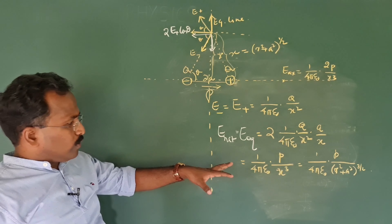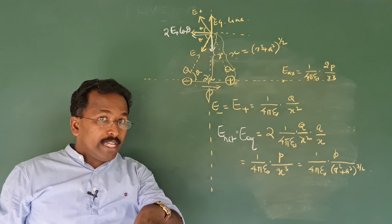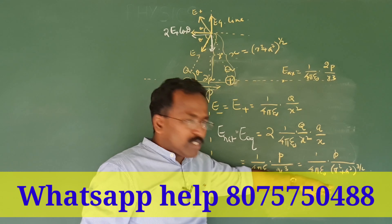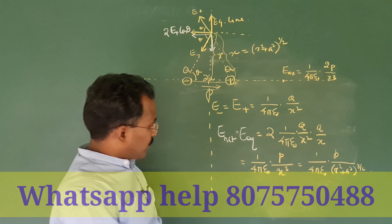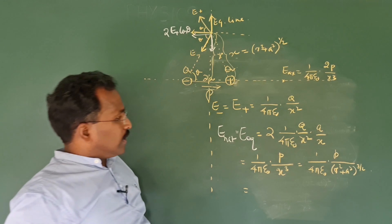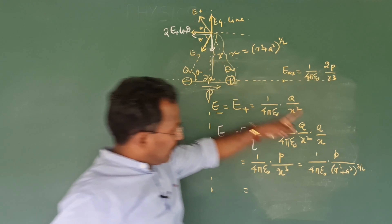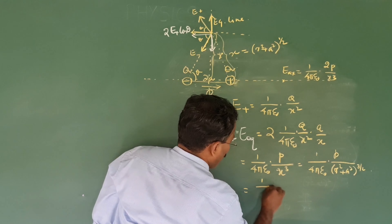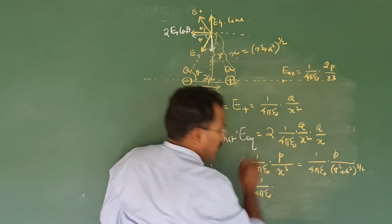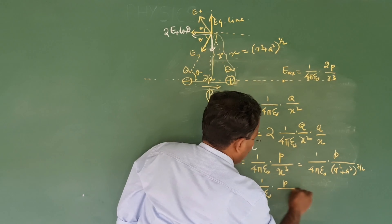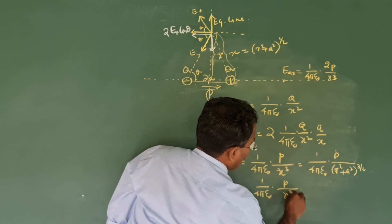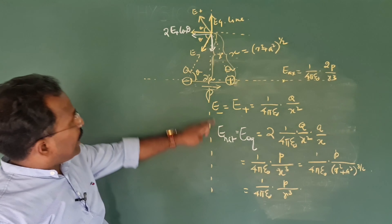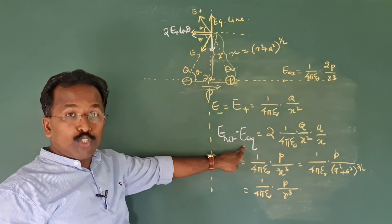Now, how that 3 by 2 comes — if you still have any confusion, you can directly WhatsApp me and I will help you, because such small things we need not explain again and again. So, as in the case we discussed earlier, A is usually very small compared to R. So this E will be equal to 1 by 4 pi epsilon 0 into P divided by R cube. I assumed A to be 0. So I landed on an equation for equatorial electric intensity.